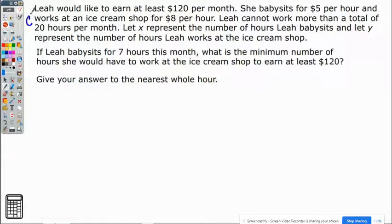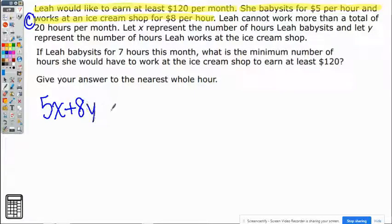This is Part C of the question we worked on about Leah. Leah wanted to earn at least $120 per month. She babysits for $5 an hour and works at an ice cream shop for $8 per hour. This is the equation we made from Parts A and B: 5 dollars per hour babysitting plus 8 dollars per hour at the ice cream shop, and she wants to earn at least, meaning more than or equal to, $120.